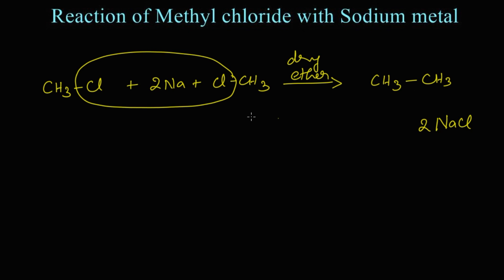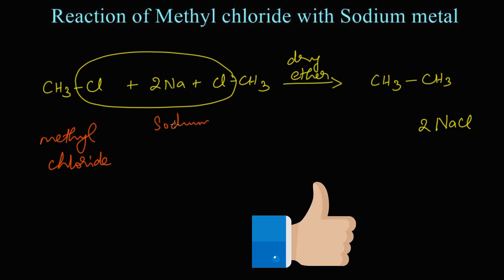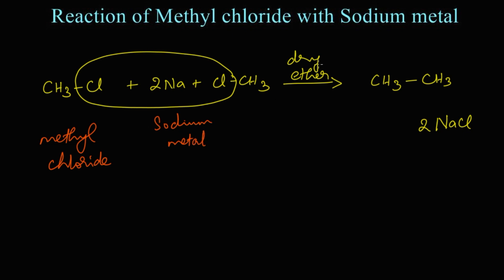Let's write the name for the structure. This is methyl chloride, or else chloromethane, reacts with sodium metal in the presence of dry ether. We get ethane as the product along with sodium chloride.